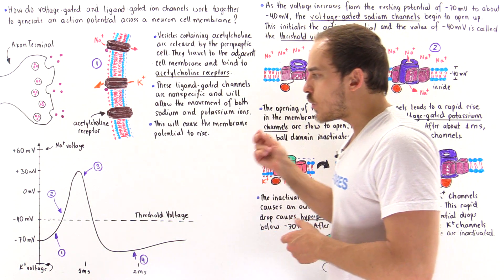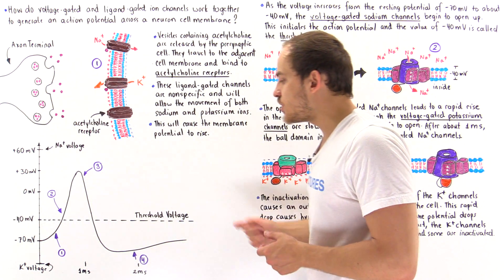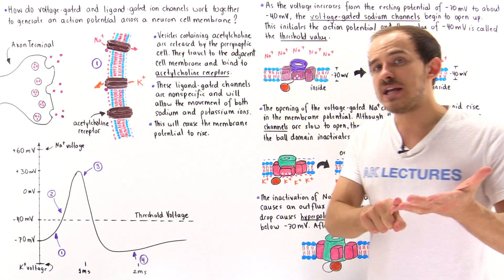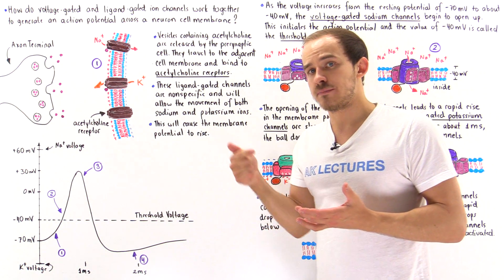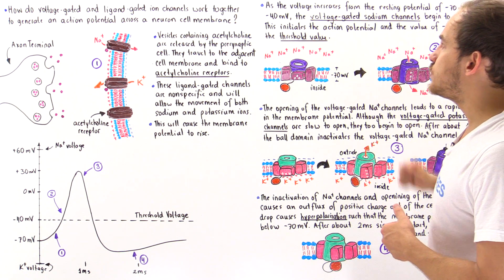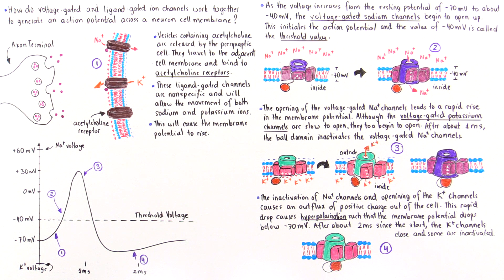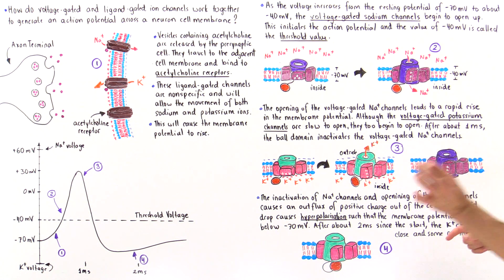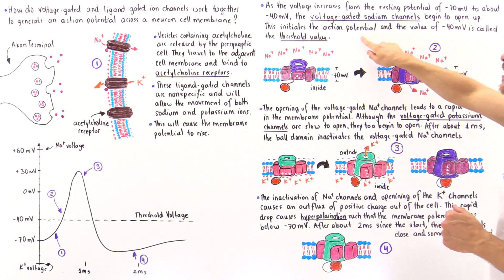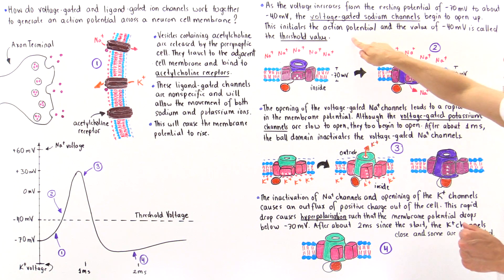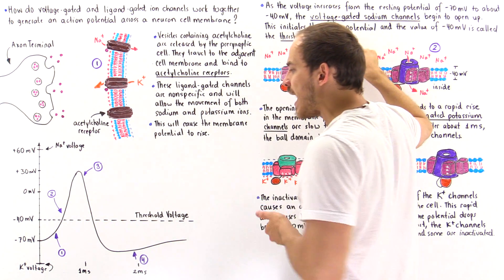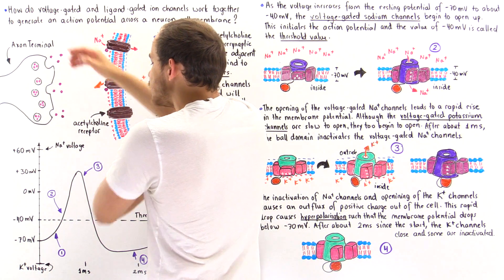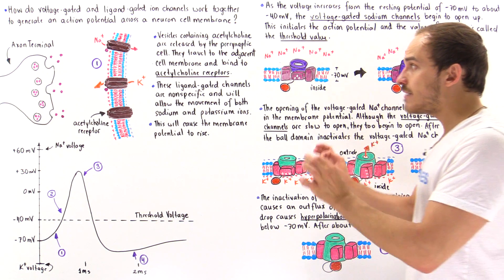If the voltage increases to about negative 40 millivolts, this is known as the threshold voltage — the voltage needed to activate the voltage-gated ion channels, including both sodium and potassium voltage-gated ion channels. As the voltage increases from negative 70 millivolts to about negative 40 millivolts, the voltage-gated sodium channels begin to open very quickly, initiating the action potential. If that threshold value is not reached, no action potential is generated.